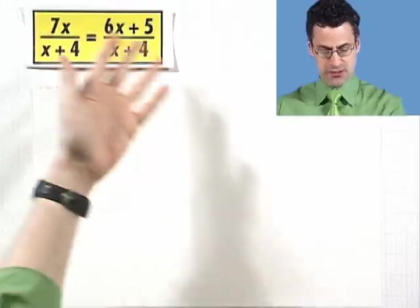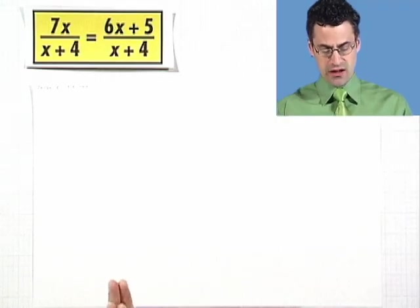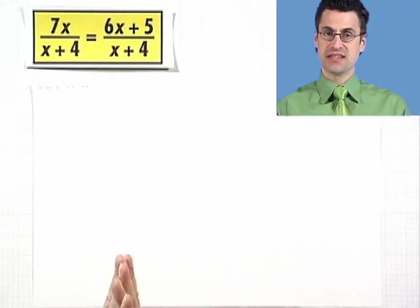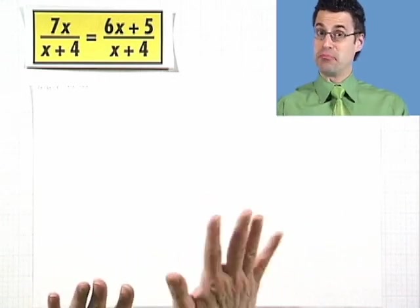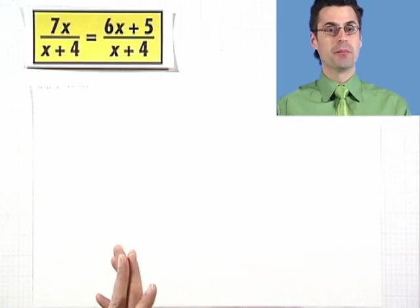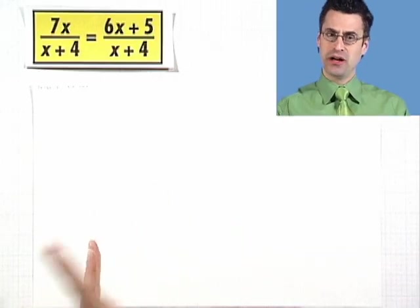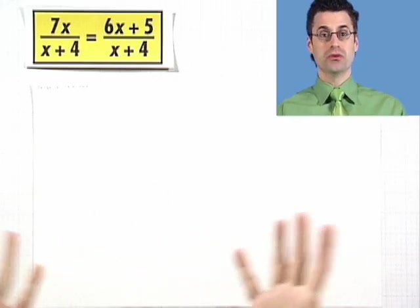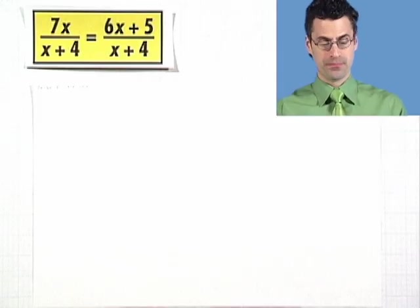Let's try another one together. I want to solve for x, but now I have rational expressions in my equation. Here's a real complicated-looking equation I want to solve. I see the denominators with x's in it — not happy — but I'm just going to multiply through by some quantity in order to make the denominators cancel.